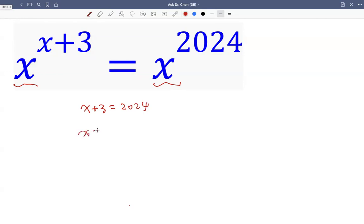So x equals 2024 minus 3, which is 2021. Of course, 2021 plus 3 equals 2024. So x raised to 2024 equals itself, which is the solution.